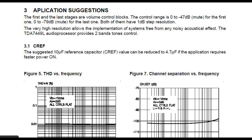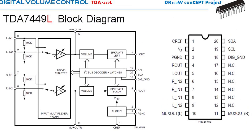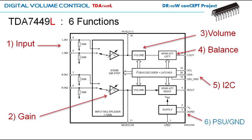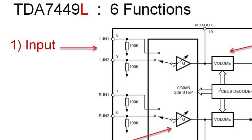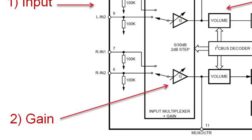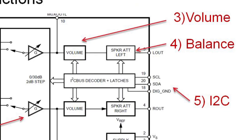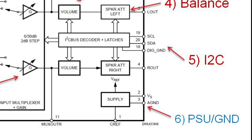The block diagram of the TDA7449L comes with six functions: number one is the input selection or input multiplexer, number two is the gain block, number three is the volume block, number four is the balance block or speaker attenuator block, number five is the I2C interface block, and number six is the PSU and grounding system.